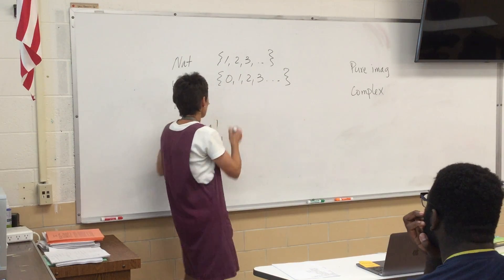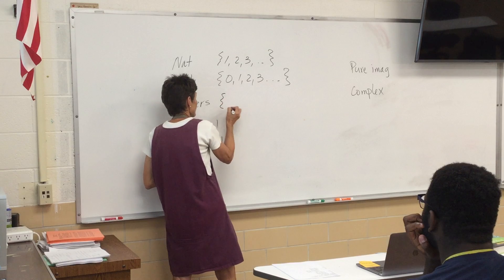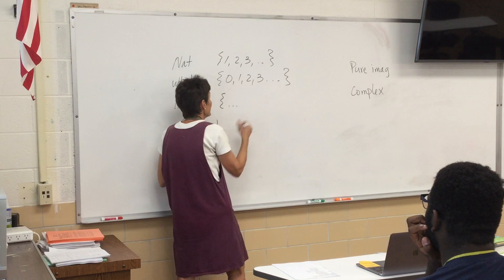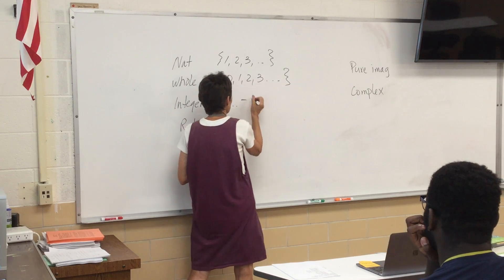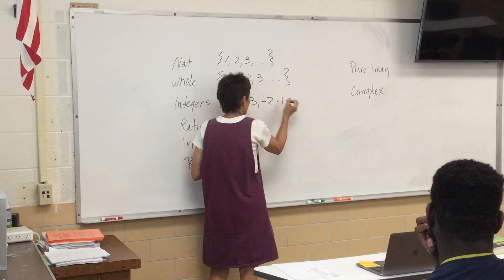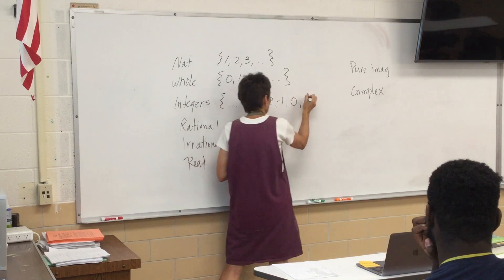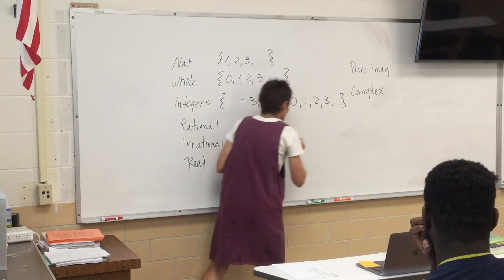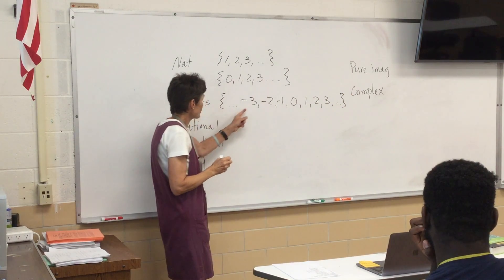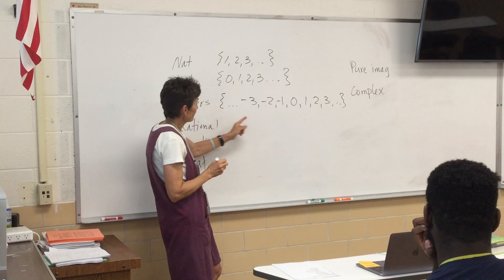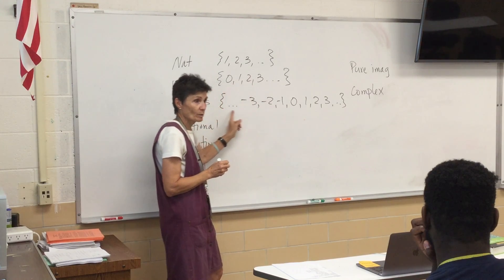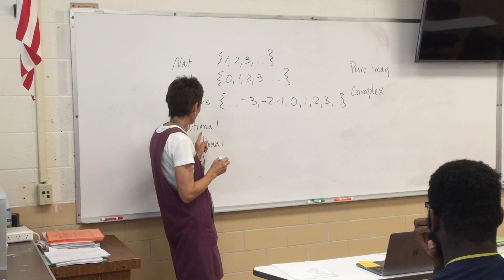And then you throw in the concept of nothing — you throw in zero. Now the integers — you know what that is? That's when we throw in the negatives. In our development as counters, we've got the negatives thrown in there. So the integers are just the same as the whole numbers, except they also include all of the negatives.